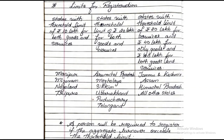The very first thing we need to understand is the threshold limit for registration. For registration purposes, states have been divided into three categories. Category one: states with a threshold limit of rupees 10 lakhs for both goods and services. In that category we have four states — Manipur, Mizoram, Nagaland, and Tripura. If the supplier is residing in any of these four states, the threshold limit is 10 lakhs for goods and services.